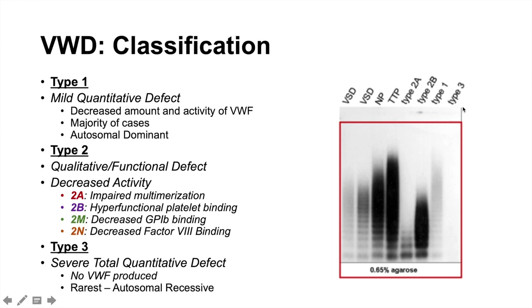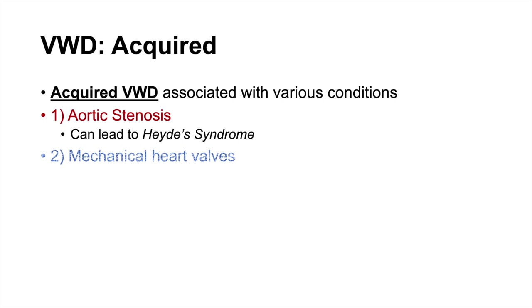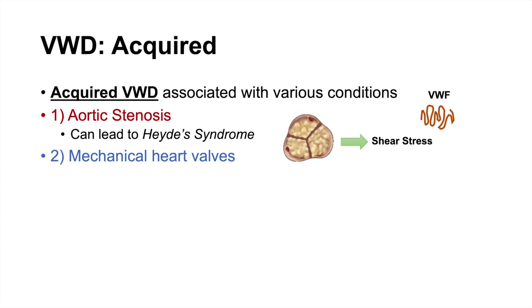Acquired von Willebrand disease is associated with particular conditions. One is aortic stenosis — the narrowed valve creates shear stress that can unravel and destroy von Willebrand factor, leading to Heyde syndrome. Mechanical heart valves similarly cause shear stress leading to acquired von Willebrand disease. Wilms tumor is another condition that causes acquired von Willebrand disease, generally through depletion of von Willebrand factor.